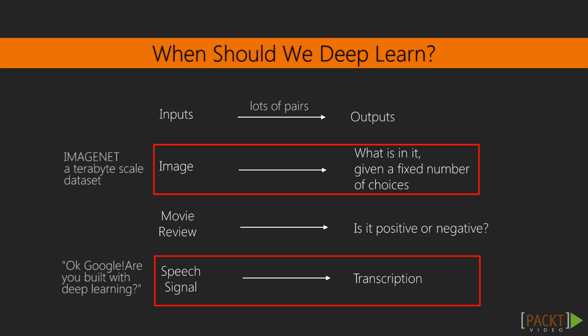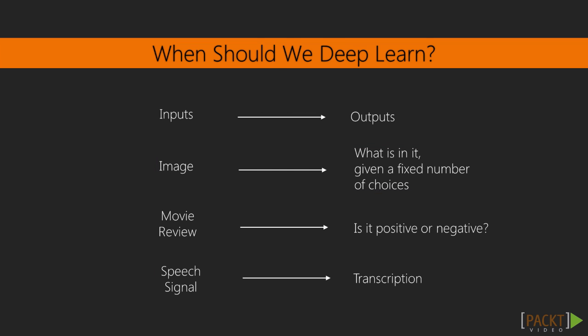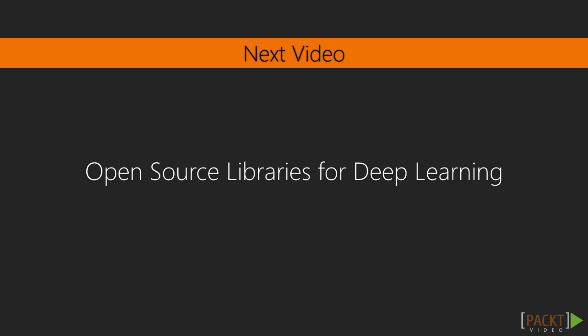In this video, we learned that neural networks are the main mathematical models behind deep learning, and what is the best case where deep learning can usually give us good results. In the next video, we will cover some of the open source libraries for deep learning.